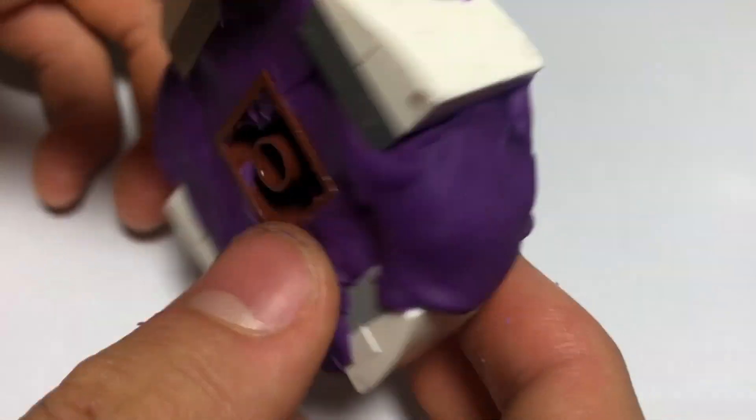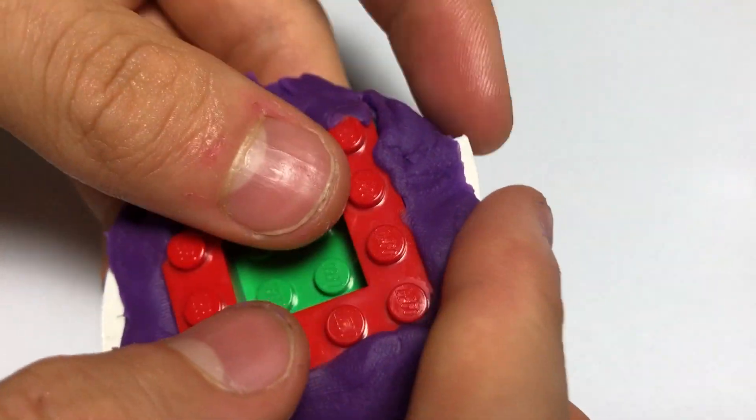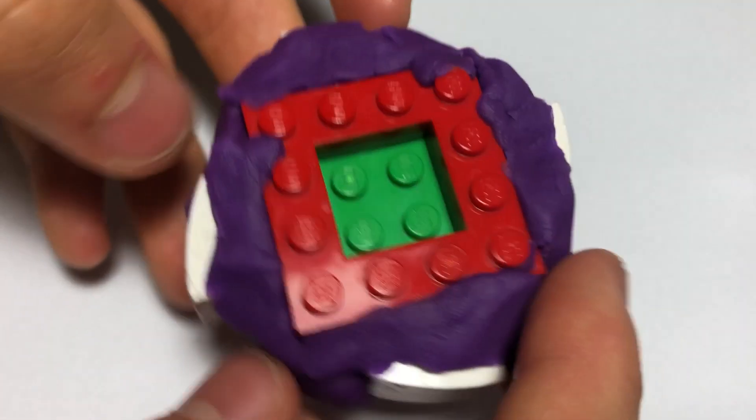Basically you make a ring of Play-Doh around and make sure that it's at least sturdy to keep itself from breaking.